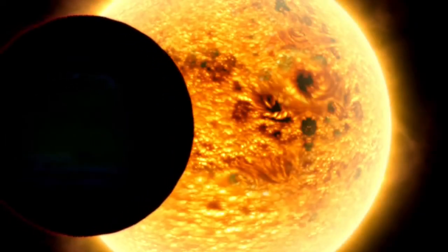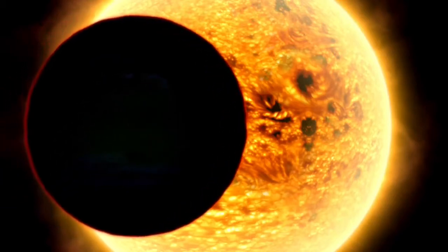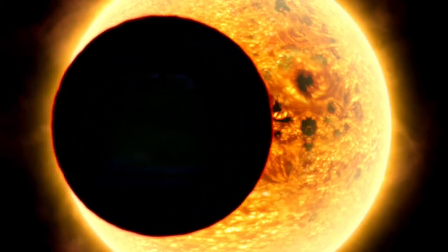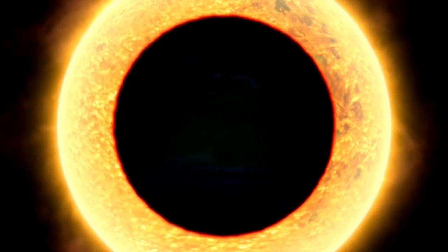Planets around other stars have been detected before, but usually indirectly by looking for clues, like the wobbling motion of a star as a planet orbits it, or a star getting dimmer as a planet passes in front of it.